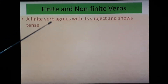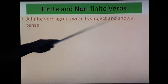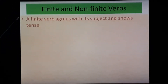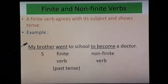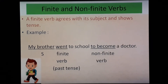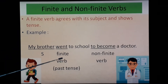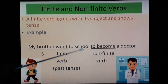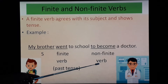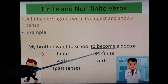A finite verb agrees with its subject and shows tense. We have already seen this in part 1. If you have not watched, kindly watch it. For example, 'My brother went to school to become a doctor.' Here, 'my brother' is the subject; 'went' is the finite verb because it shows past tense; and 'to become' is the non-finite verb because it doesn't show tense.